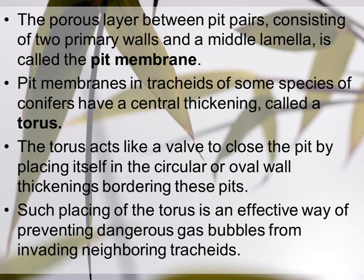The torus also prevents backward flow of water, allowing only one-way forward movement so water continues upward and does not return. Additionally, the torus prevents air or gas bubbles from forming inside the tracheids. If bubbles were to form, they would reduce water flow because gas molecules create resistance to water movement.